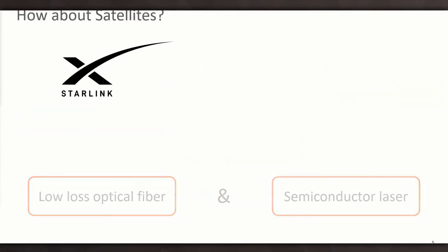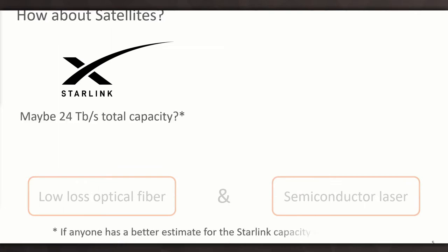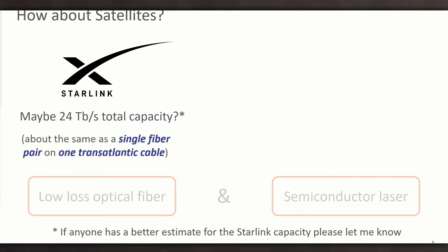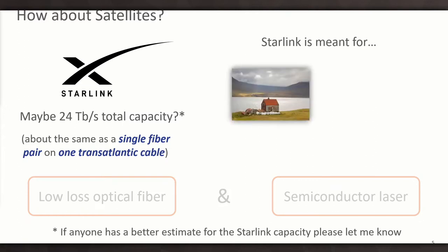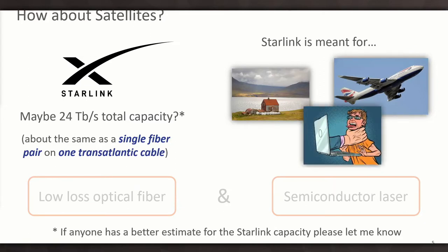So what about satellites? We hear a lot about the Starlink constellation. It's a tricky number to come up with. I did find an FCC filing that mentioned the total capacity of the Starlink constellation might be as high as 24 terabits per second. By the way, if anyone has better numbers on that, I'd be happy to accept them. But if you think about it, that's about the same capacity as a single fiber pair on one transatlantic submarine cable.